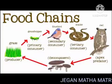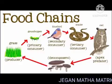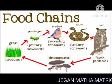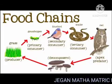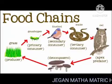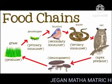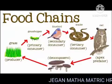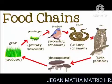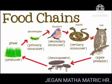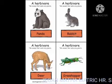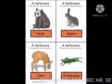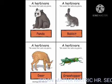Consumers are called heterotrophs. There are many types of consumers and we can classify them into specific groups depending on the food they consume. These are herbivorous, carnivorous, omnivorous, and decomposers.